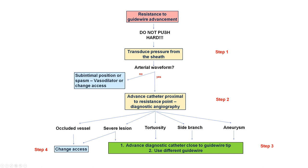The key concept for both guide wire and catheter resistance is to never push hard — this is how complications happen. Instead, it is important to try to understand why there is resistance and then solve the problem by addressing the underlying issue. The first step is to transduce the pressure from the sheath to ensure there is no subintimal position and no significant spasm when using radial axis. If there is a good arterial waveform, the next step is to advance a catheter proximal to the point of resistance and perform angiography.